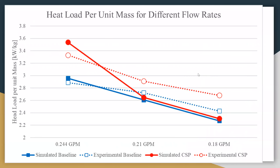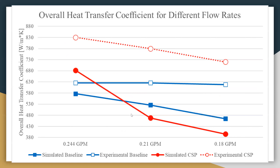For the baseline model results, we compared the simulated results for those baseline models to the experimental results from the paper. The heat load per unit mass for different flow rates lines up pretty well with the experimental values, given that we used a significant number of nodes and high-degree accuracy in the simulations. The same effect is seen for the overall heat transfer coefficient — they don't line up as well as the heat load per unit mass, but it still gives a good representation of the differences between the experimental and the CSP results.